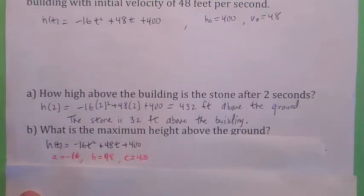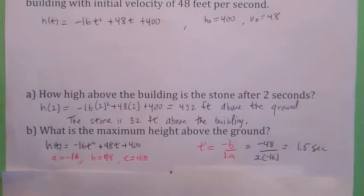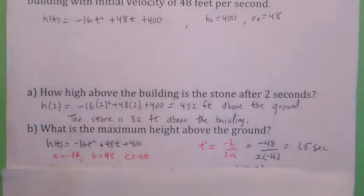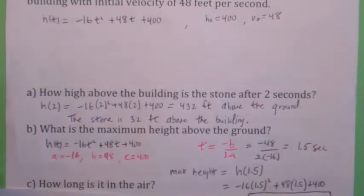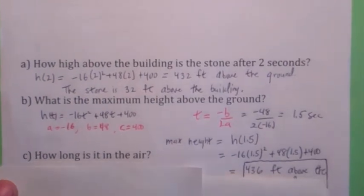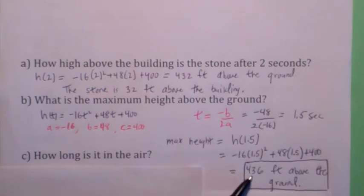All right, so a is negative 16, b is 48, c is 400. Again, when you compute negative b over 2a, that's the time when it reaches the maximum height. You'd now have to plug that into your height function. Plug in h(1.5) and you turn up, you get 436 feet.